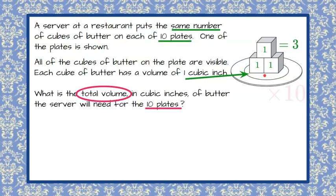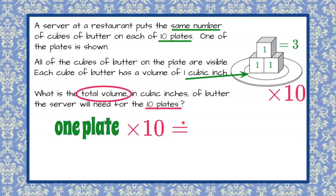So we know that what we have to do is multiply that volume by 10 to find out the total volume for 10 plates. So what we have here is 1 plate times 10 for 10 plates, and that will give us our answer.